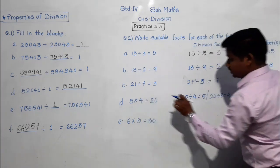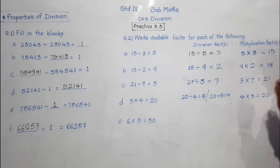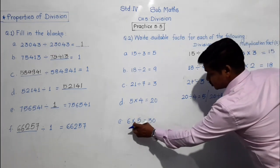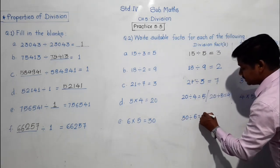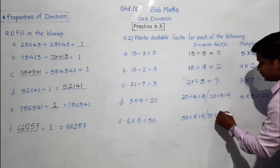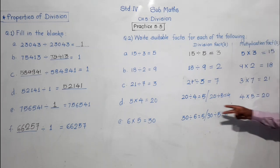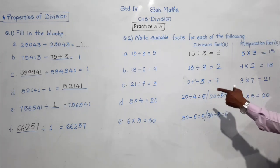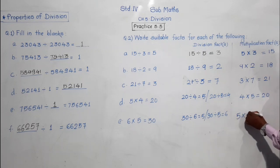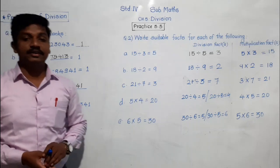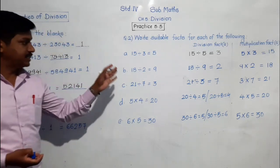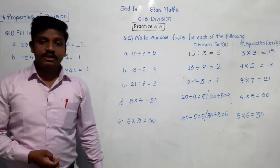We just interchanged 5 and 4 — it is the same. Similarly, 6 into 5 equals 30. In division form: 30 divided by 6 equals 5, or 30 divided by 5 equals 6. And the multiplication fact: 5 into 6 equals 30. So it is very easy. With this, our Chapter 5 on Division is completed. Write this in your textbook. If you have any doubts, you can ask me. Thank you and have a nice day.